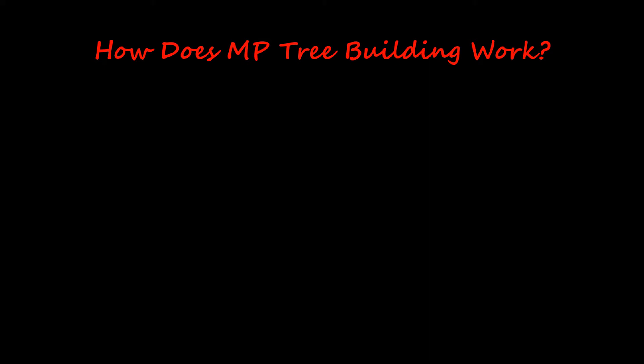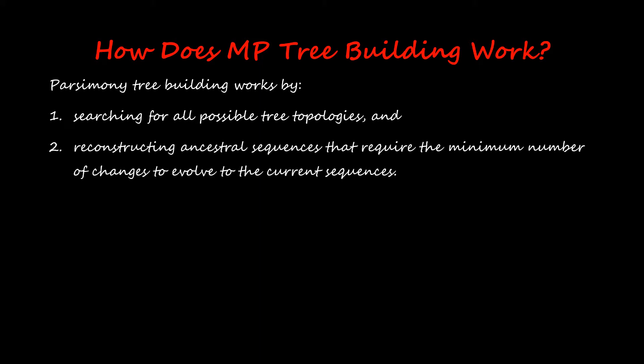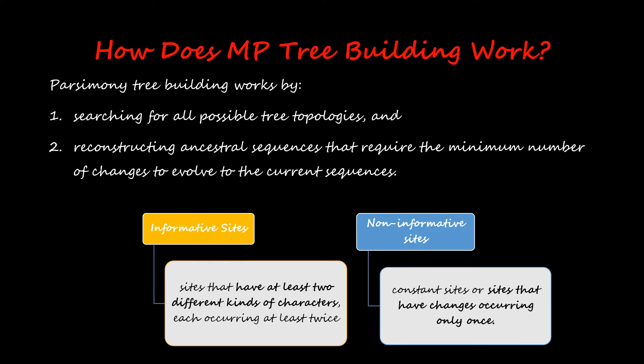How does MP tree building work? Parsimony tree building works by searching all possible tree topologies and reconstructing ancestral sequences that require the minimum number of changes to evolve to the current sequences. We look for two things: informative sites and non-informative sites. Informative sites are sites that have at least two different kinds of characters, each occurring at least twice. Non-informative sites are constant sites or sites where changes occur only once.